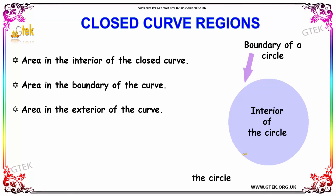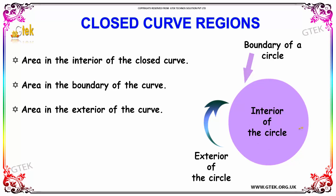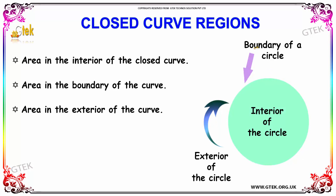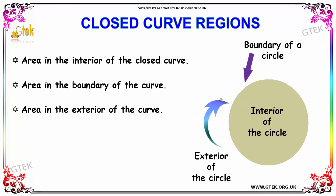What are closed curve regions? The area interior to the closed curve is known as the interior of the curve — this forms the interior of the circle. The area along the curve is the boundary of the circle. The area lying outside the curve is said to be the exterior of the curve. This is how closed curve regions are defined.